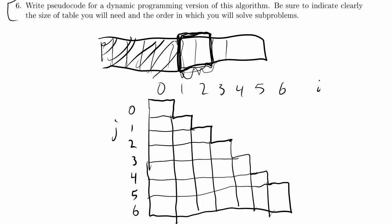Now let's look at the entry where i equals 1 and j equals 4. The question is: which subproblems does this depend on? If you look at the code, what we do is take the minimum over a variable k ranging from 1 to 4. We rely on subproblems — let's write them out. We'll have i-left, j-left, i-right, and j-right. When i equals 1 and j equals 4, k will be equal to 1, 2, 3, or 4.